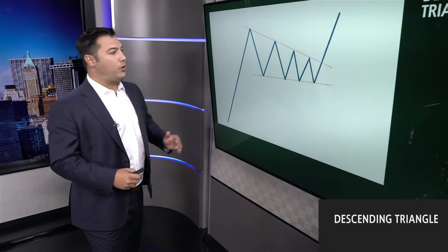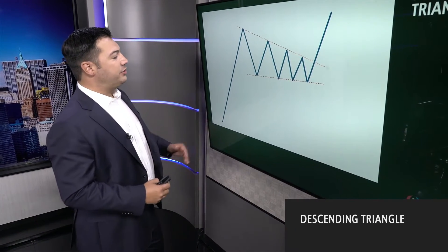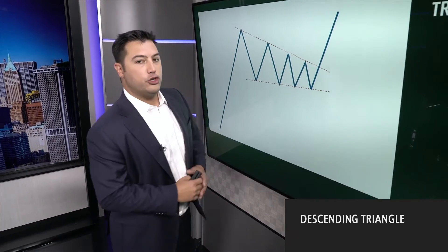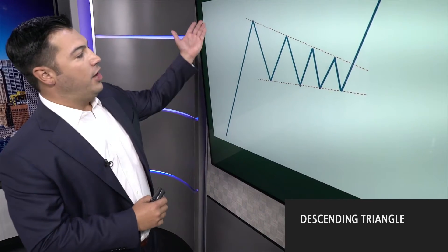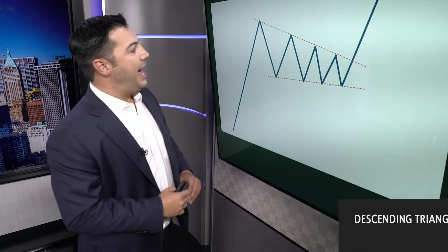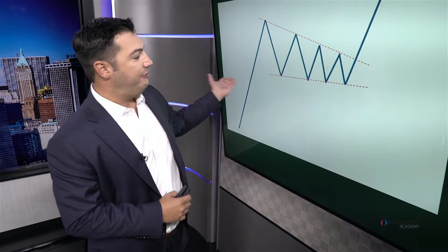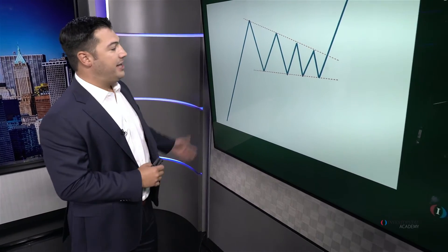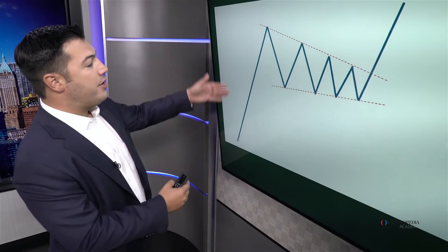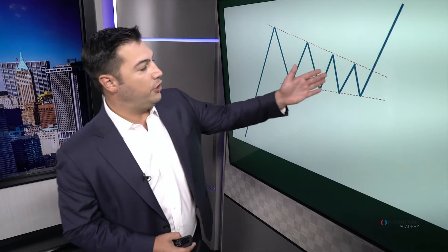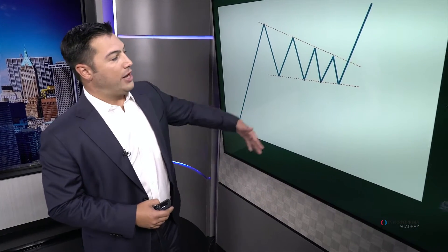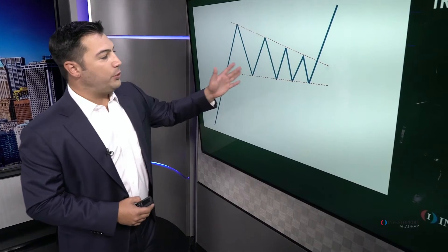Similar to the symmetrical triangle, here we have a descending triangle. The only difference is rather than two converging trend lines, we have a downtrend line that is the upper boundary of the consolidation, and then a flat horizontal trend line that is the lower boundary. Here we have a prior uptrend and a digestion of those gains, and again that resolution should come somewhere between two-thirds and three-quarters towards the apex.